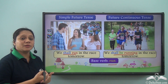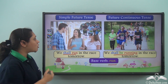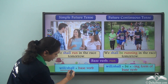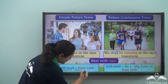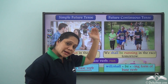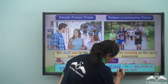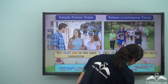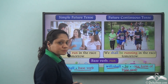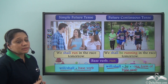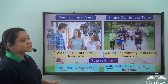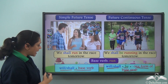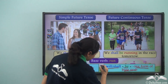What we see in both tenses is that the form of the base verb is different. In the simple future tense, we use will or shall with the base verb. In the future continuous tense, we use will or shall, then 'be', then the -ing form of the base verb. To understand whether a sentence is in simple future or future continuous tense, look at the formation of the verb.